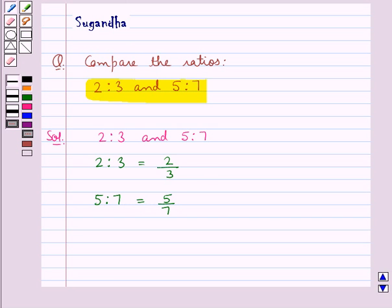Now, let's find out the LCM of the denominators of both these fractions, which are 3 and 7. So, LCM of 3 and 7 is equal to 21.